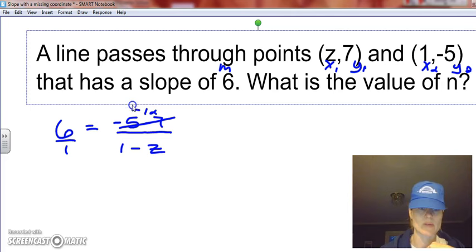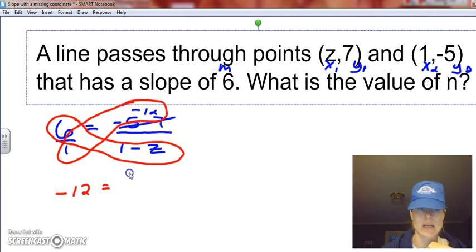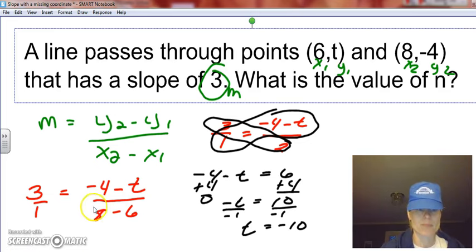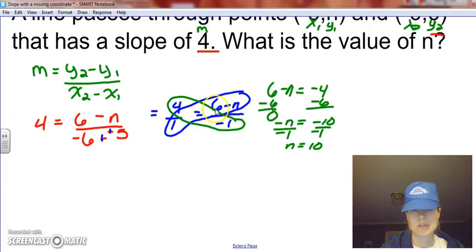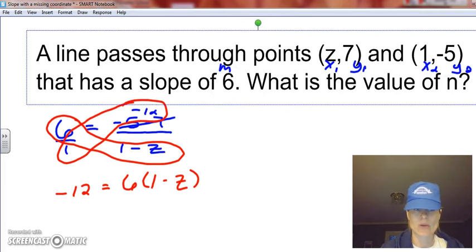Now when we cross multiply, we have to be very careful. This part's easy: we have 1 times -12, which is -12. But this time we have 6, and this is where a lot of mistakes are going to occur. This is 6 times (1 - z). In our previous example, this wasn't too bad because this number was always being multiplied by 1, so it's just itself. Same thing in this example here: 1 was being multiplied by (6 - n). But in this case, we don't have 1 anymore; we have 6, which means you have to distribute, and it needs to go to both items here. So this is going to be 6 - 6z equals -12.